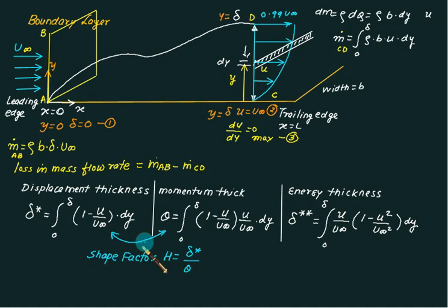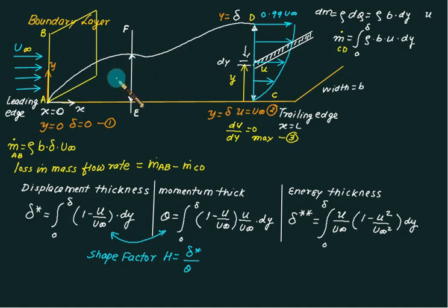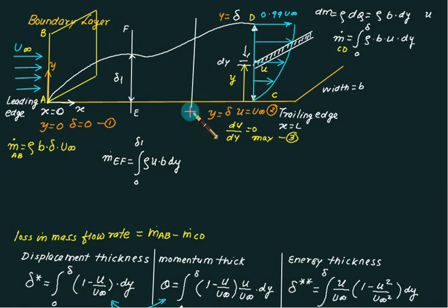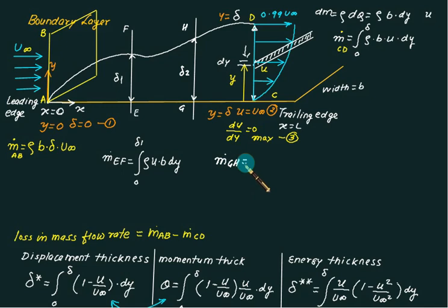Sometimes questions ask about loss of mass, or give a section EF where the boundary layer thickness is delta-1. The mass flow rate through section EF is the integral from 0 to delta-1 of rho multiplied by u multiplied by b multiplied by dy. Consider another section GH where the boundary layer thickness is delta-2. The mass flow rate through GH is the integral from 0 to delta-2 of rho multiplied by u multiplied by b multiplied by dy. Naturally, delta-2 is more than delta-1.